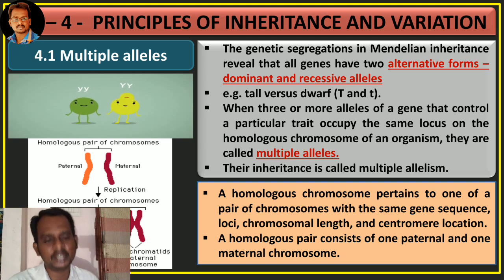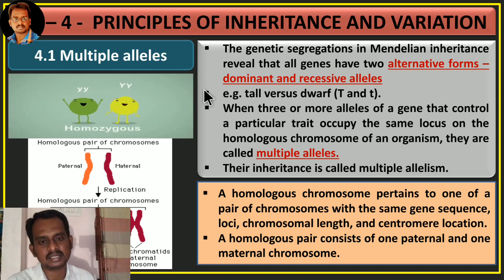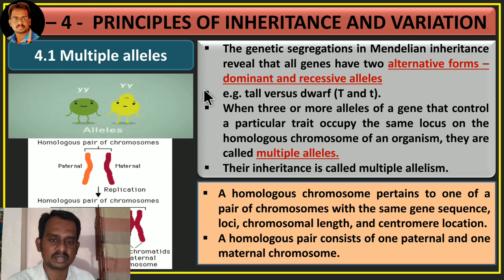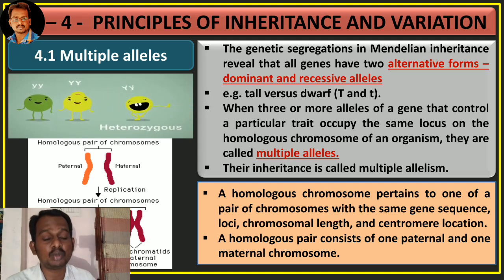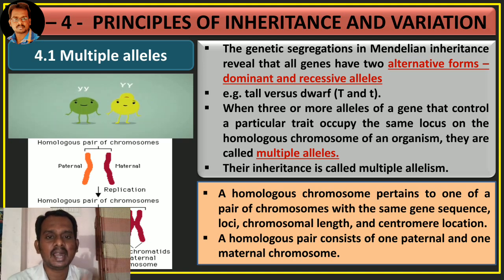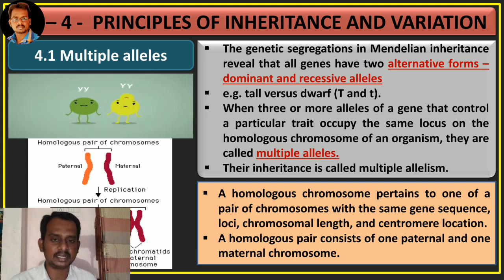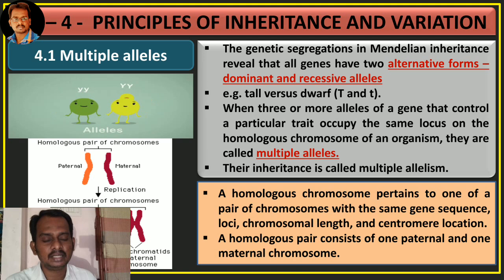Genetic segregation in Mendelian inheritance revealed that all genes have two alternative forms — one is dominant and another is recessive. These dominant and recessive alternatives are called alleles. The alternative forms of genes are called alleles. There are two types of alternative forms, namely dominant and recessive.